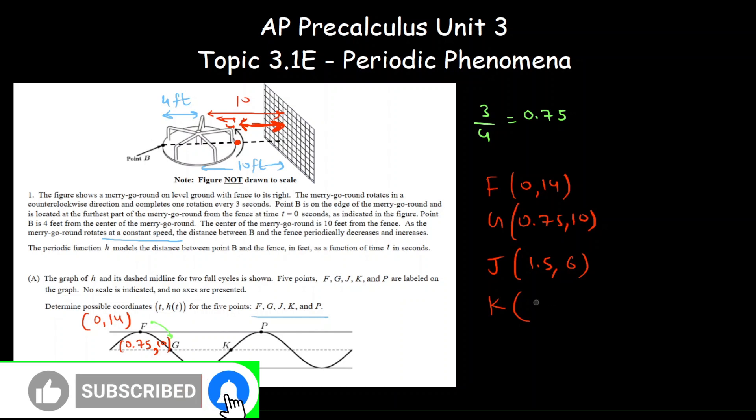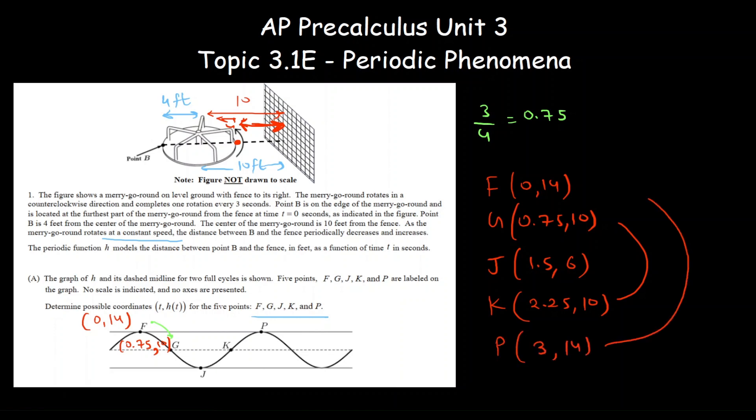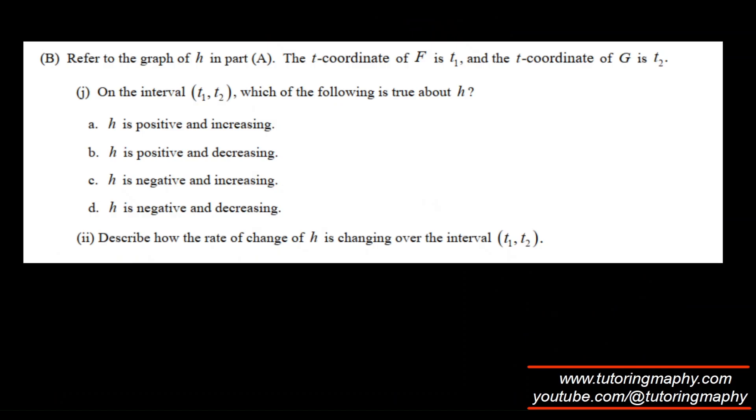K will be at the same distance, which is 2.25 comma ten, same as G. And P will be at three comma fourteen, same as F. They're asking us to analyze between F and G.